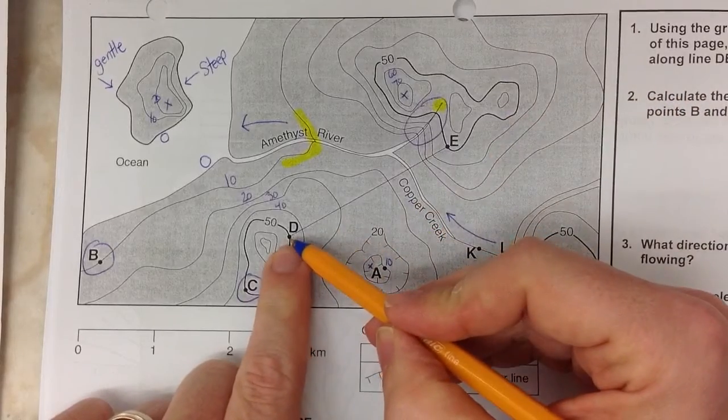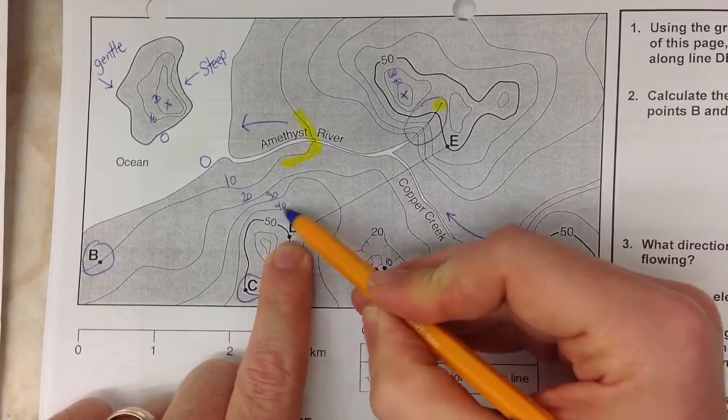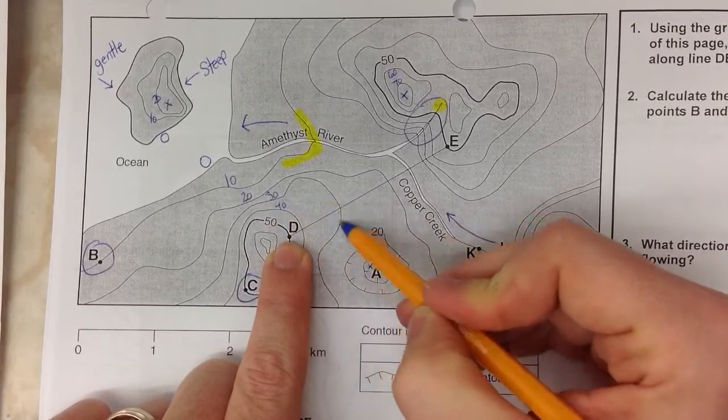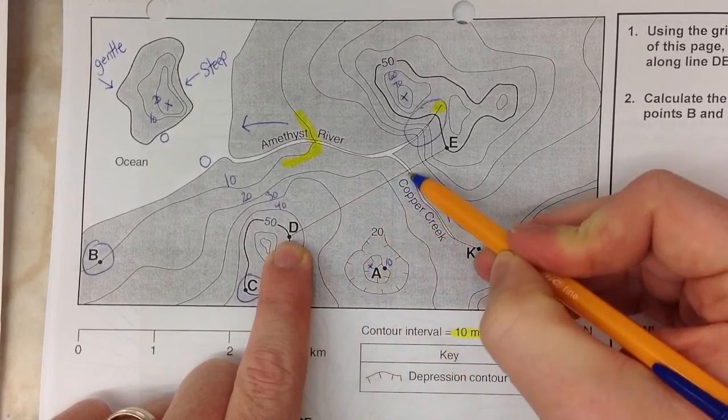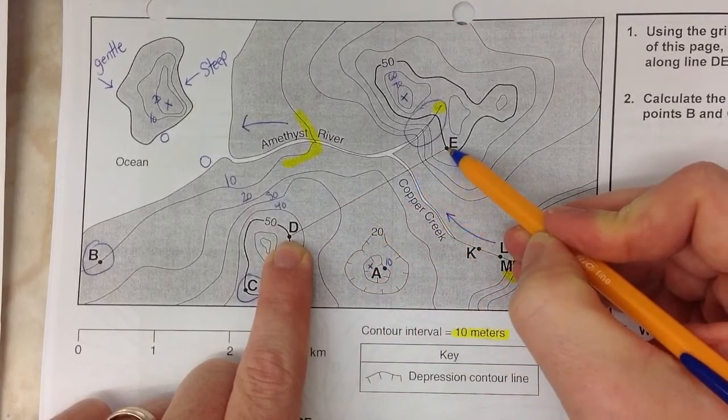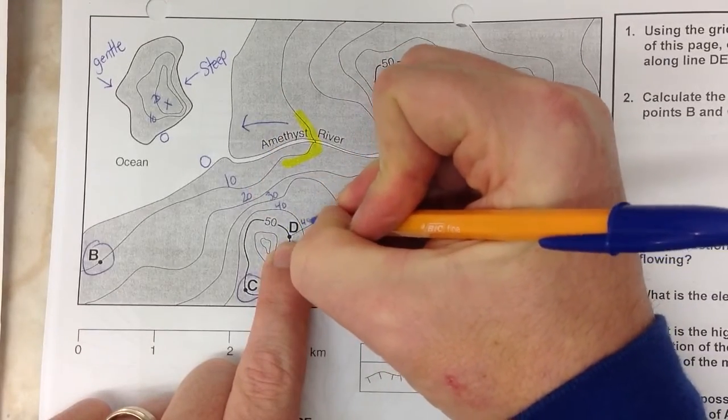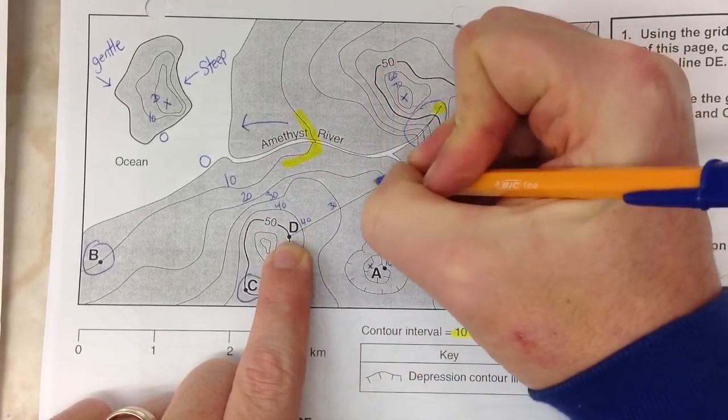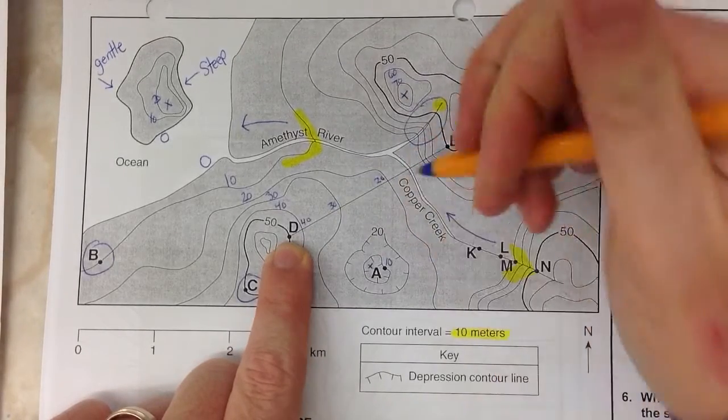So I'm going at D. I'm going down to Copper Creek. I know I'm going down because I've already labeled the 40 line and the 30 line and the 20 line. You're going to go down to the river or down to the creek and then back up to point E. So 50 is labeled, 40, 30, 20.